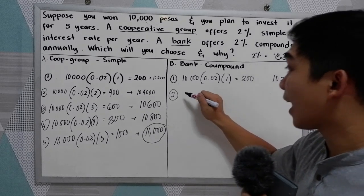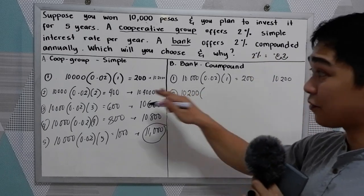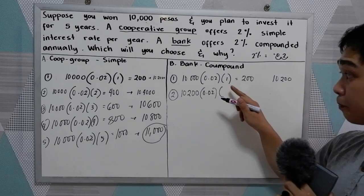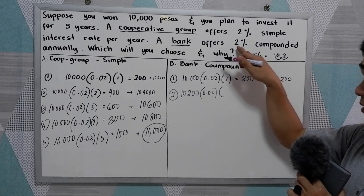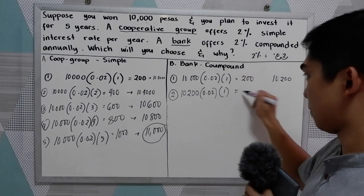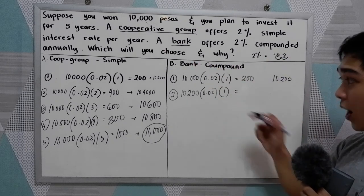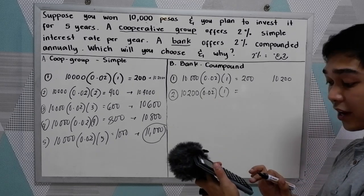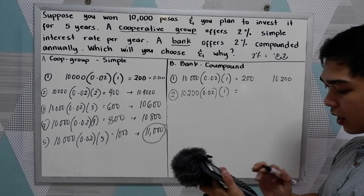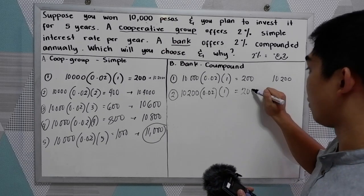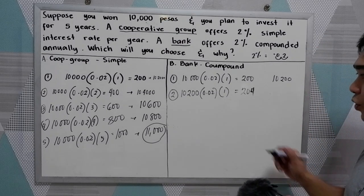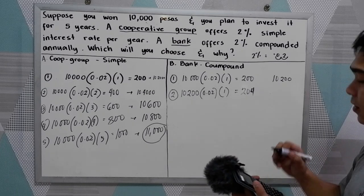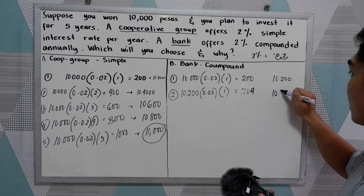For the second year we use 10,200 as the new principal. That is the key difference between the two methods. So 10,200 × 0.02 × 1 = 204 pesos interest. Adding that: 204 + 10,200 = 10,404 pesos. That is your money after the second year with compound interest.